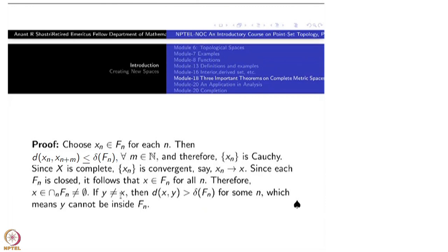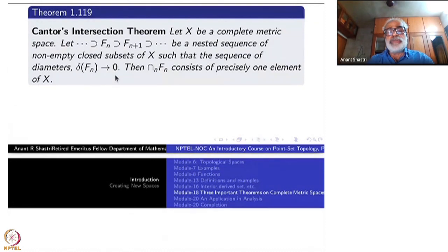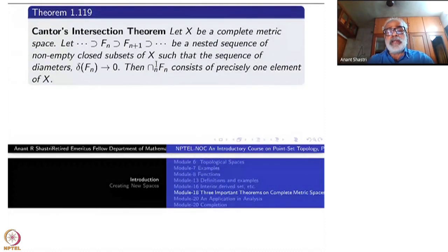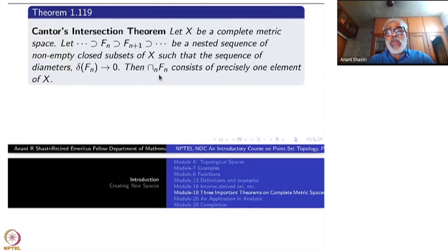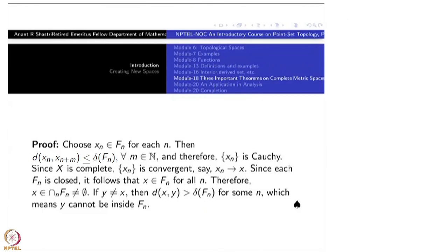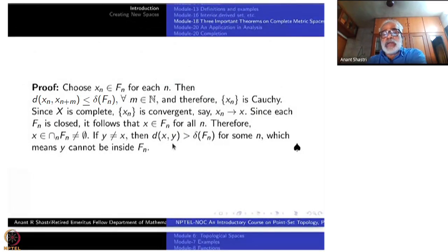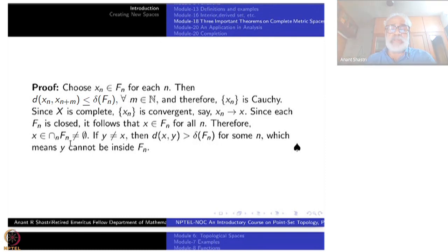That just means that intersection is non-empty. The second part that it must be a single element comes very easily because of this delta F_n goes to zero. So the diameter of this one will also become zero. So diameter is zero, the set can be only single element. Anyway, if y is not equal to x, then d(x,y) will be positive. Therefore, it will be bigger than delta F_n because delta F_n is converging to zero. Once it's bigger than delta F_n, both x and y cannot be inside F_n. So any point which is not equal to x is not inside the intersection. So there is only one point.